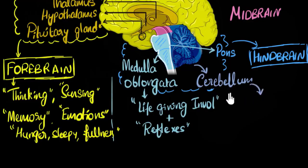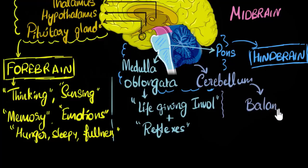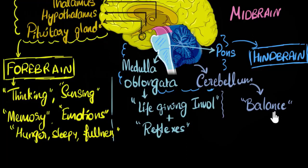What does the cerebellum do? It has an involuntary function: maintaining balance. Even the simplest tasks like walking or holding a cup require careful calculation and coordination — knowing where gravity is and so on. If you try to build a robot, you realize how complicated these things are, but we do it with ease. That's because of our cerebellum, which maintains our balance.